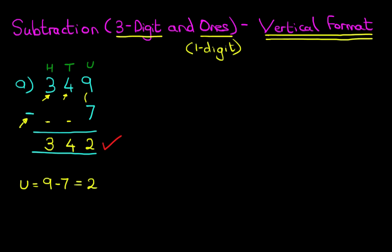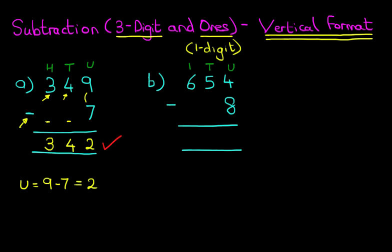That was a nice easy one. Now let's look at one which is a little bit tricky. This time we've got 654 minus 8. Let's label the columns — we've got units, tens, and hundreds. We are now ready to do the subtraction. Check the sign, and we start with the column on the right-hand side first. The units: we've got 4 minus 8.